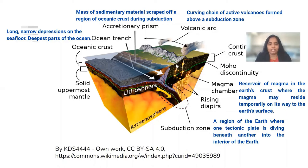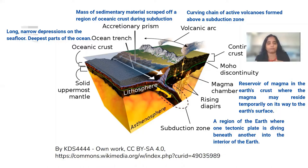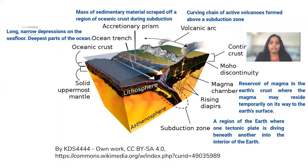This is a volcanic arc. What happens is that when the lithospheric oceanic plate goes down into the asthenosphere, it is destroyed, and this sometimes pushes molten material from the asthenosphere upwards. That molten material finds its way upward and causes volcanic eruption — a series of volcanoes. The volcanic arc is a curving chain of active volcanoes formed above a subduction zone, and it is associated with the subduction zone.